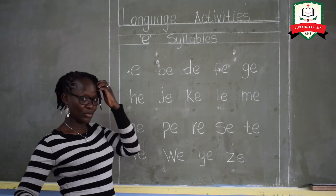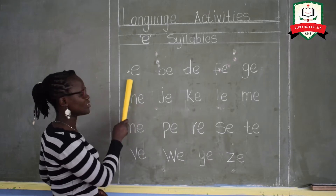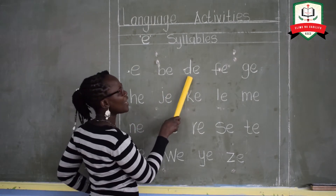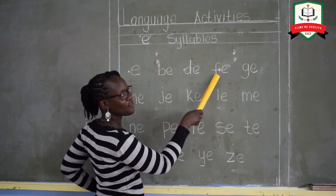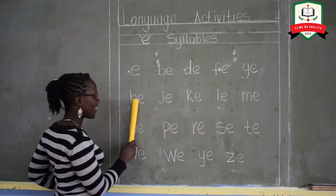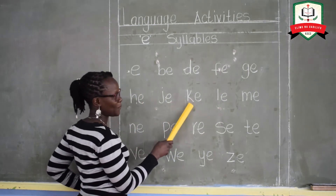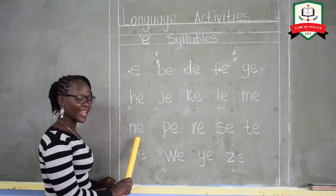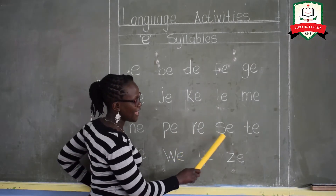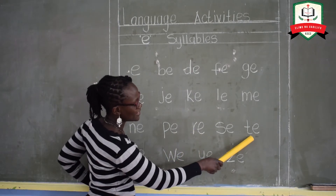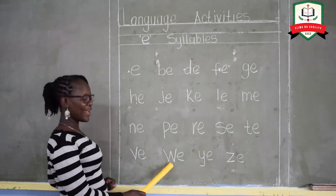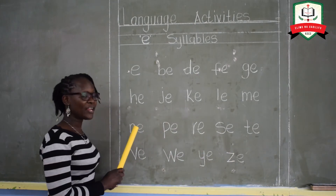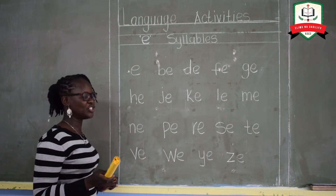Are you ready? We are going to read together with you. Let's start from the first sound. EA, BA, DA, FA, GA, HA, JA, KA, LA, MA, NA, FA, RA, CA, TA, VA, WA, YA, and ZA. Now I am going to point at these syllables as you read in your own time.